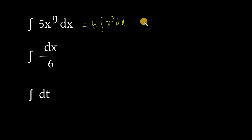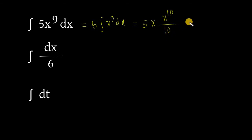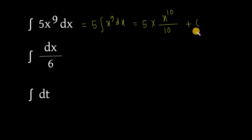E shutra ekhane proyek kutte aamra bolte paari 5 into x to the bar n plus 1 — artho 9 plus 1 = 10 — divided by n plus 1 artho 10. Correct. Plus c aamra nebo. Ekhane c hoche integrate constant, constant of integration. Correct. Taahle aamra kane paatsi 5 into x to the bar 10 divided by 10.